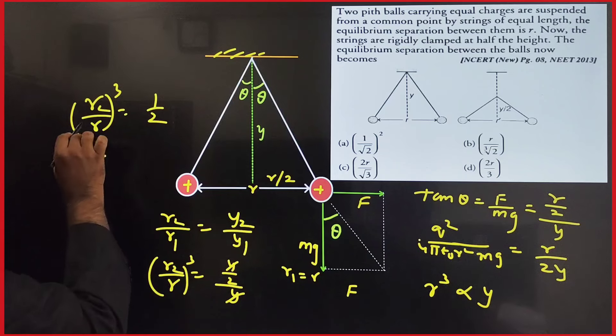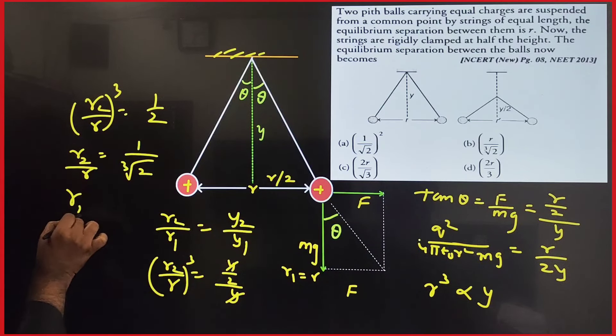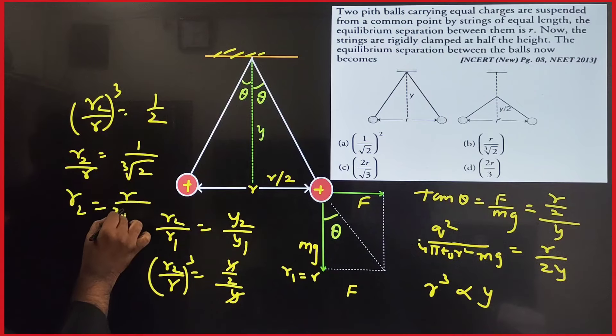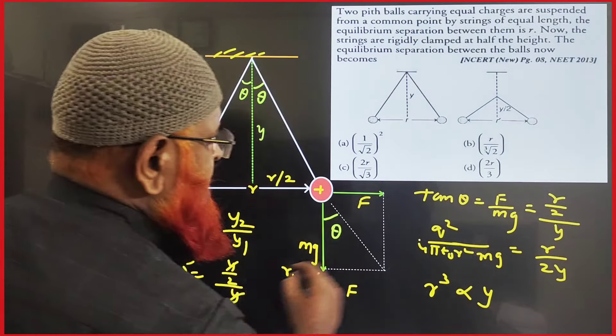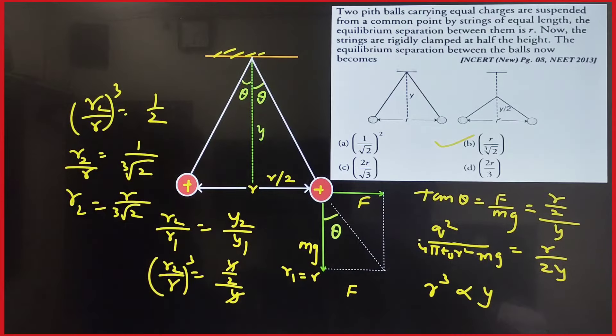So therefore R₂ is equal to R by cube root of 2. That's it. R by cube root of 2, option B is going to be the correct answer. So simple method I have explained here.